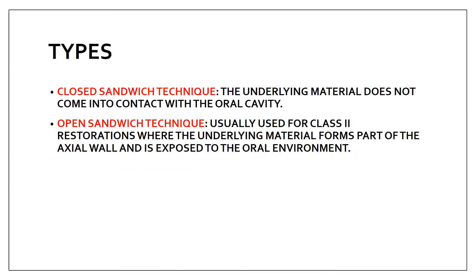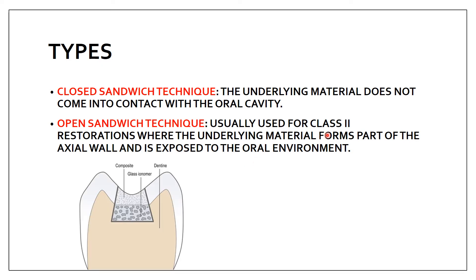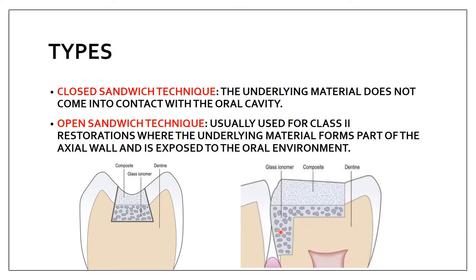There are two types of sandwich technique: closed and open. In closed, your GIC liner is not exposed to the oral cavity. In open, your GIC is exposed to the oral cavity. Open is usually used for a class 2 restoration. In the closed type, the GIC is completely covered with composite and is not exposed to the oral cavity, whereas in the open type, the GIC is coming in contact with the oral environment.